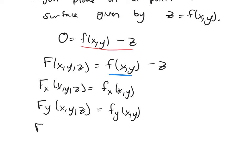And now if I take the partial derivative with respect to z, the only place there's a z is in this last part right here, and the derivative would be negative one.